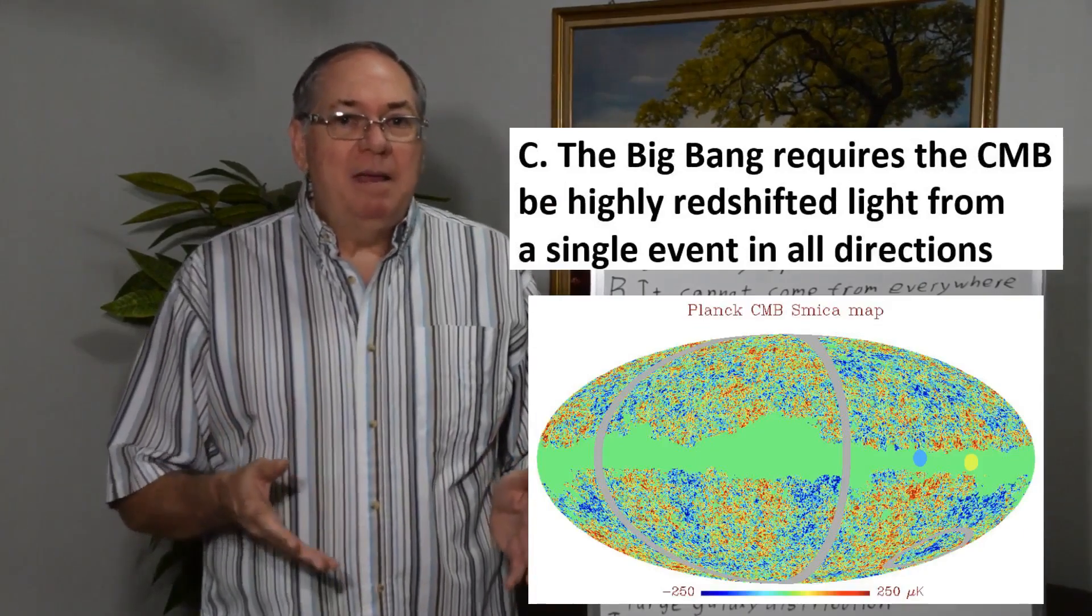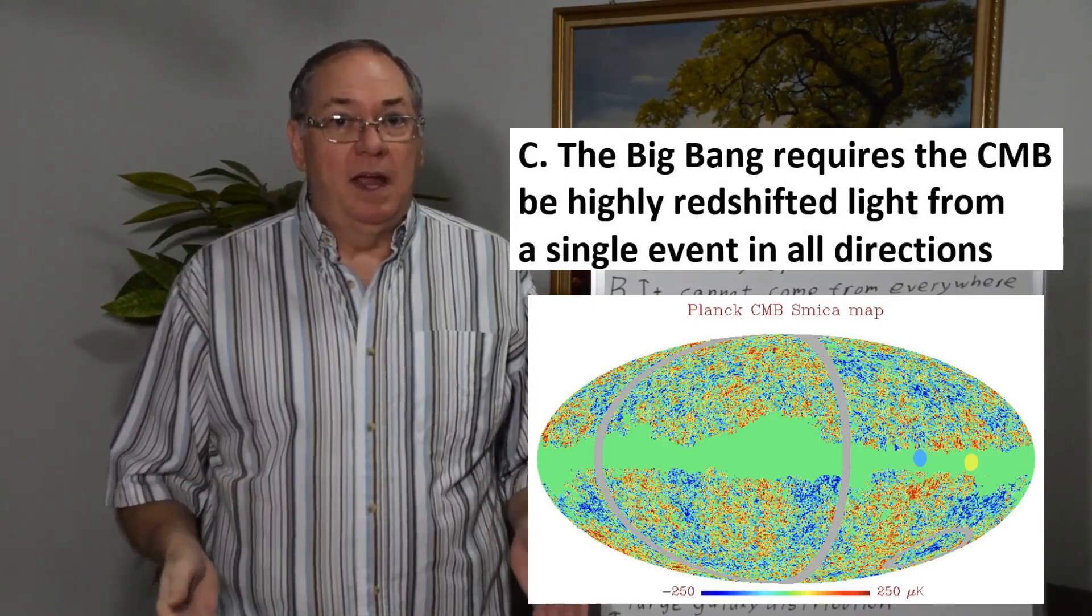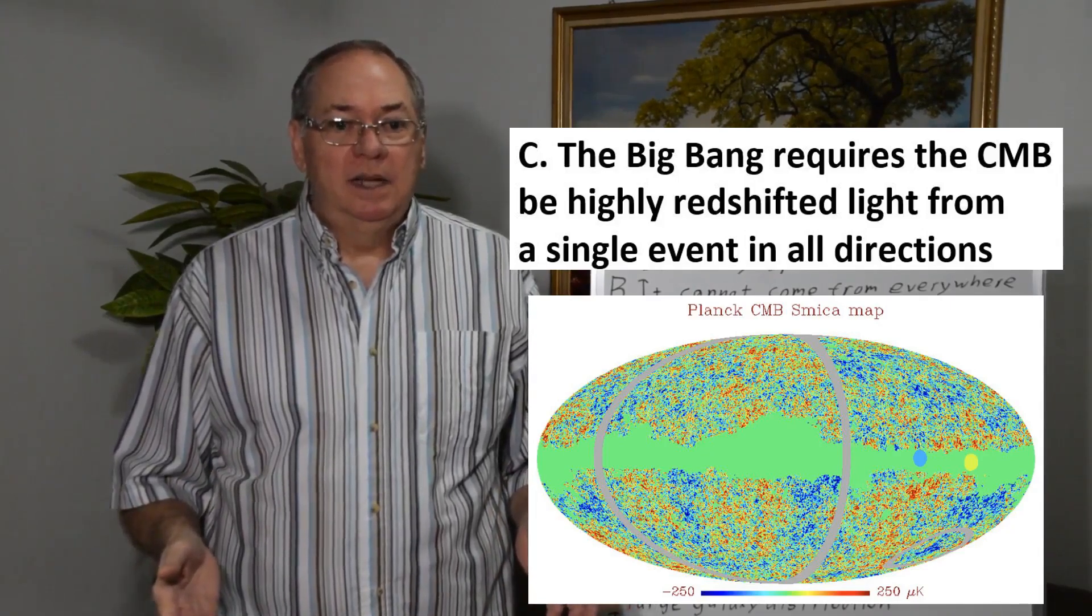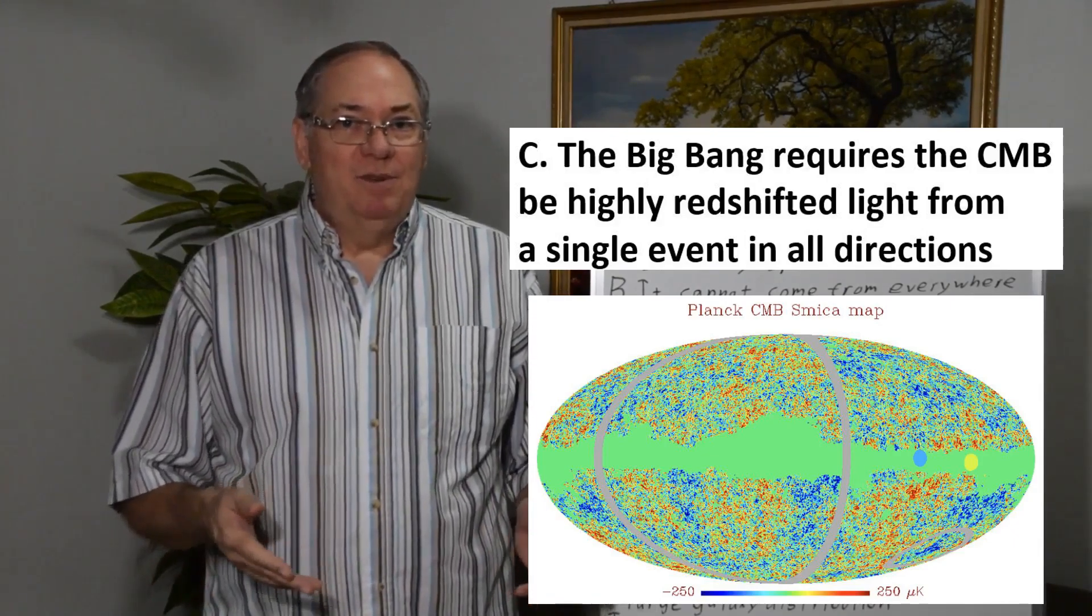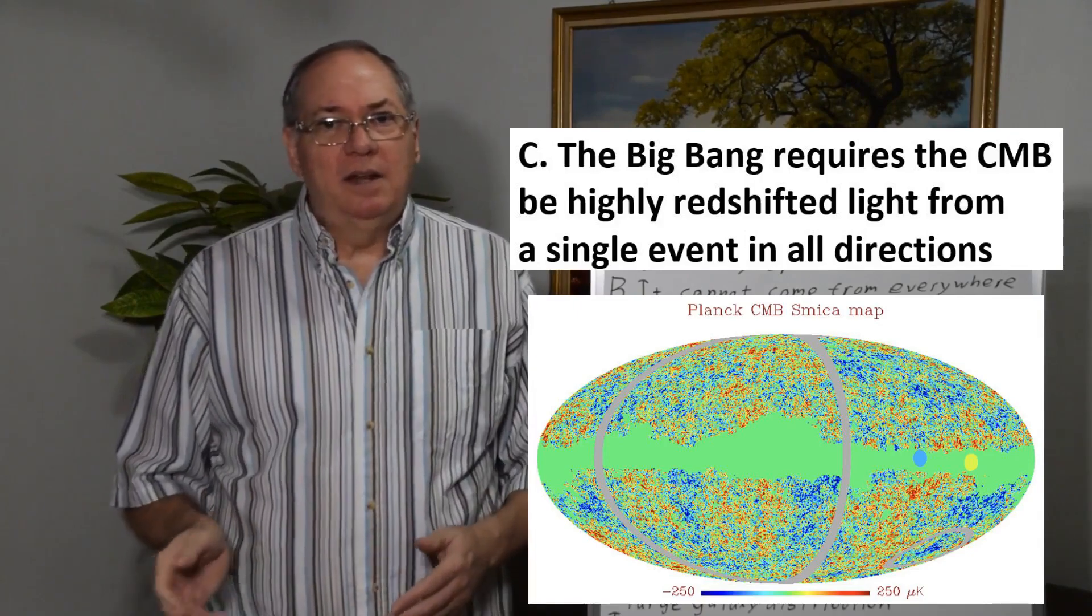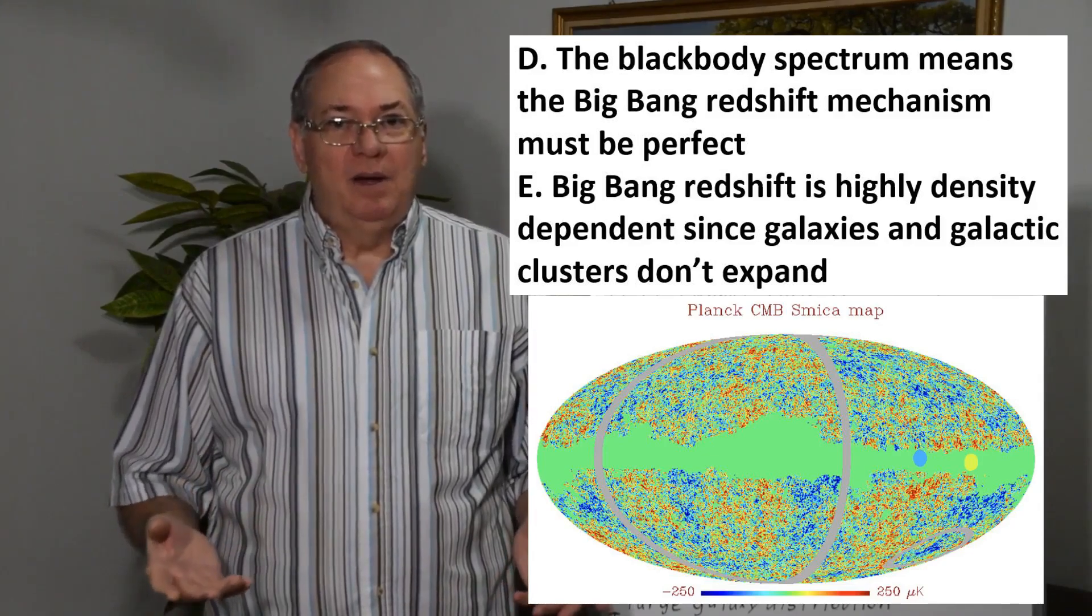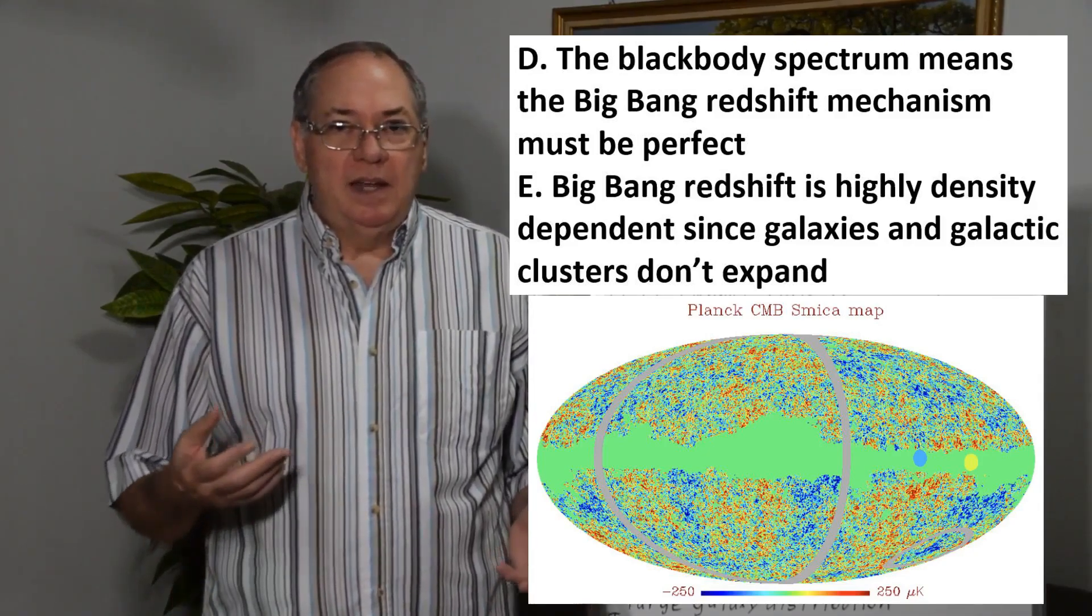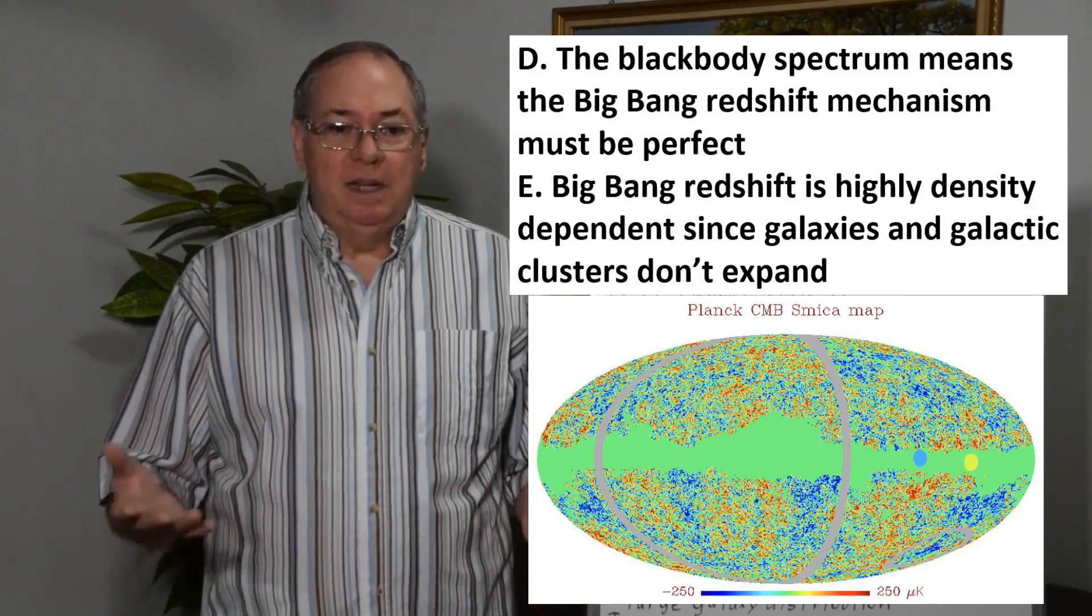So in the Big Bang Model, they try to deal with this by saying that it only happened at a point in time in the past everywhere so that it comes from every direction. And it's highly redshifted by Z equals 1100. So a huge amount of redshift to get it all the way down to the microwave. So we have this perfect redshift everywhere with the Earth in the middle. And that's a big problem for the Big Bang Theory, which is a Doppler redshift that's caused by the expansion of the universe in the Big Bang Model.